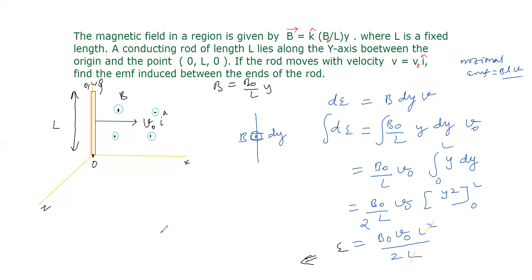This induced EMF across the ends of the rod is EMF = B0V0L/2. This is the answer. So induced EMF in the varying magnetic field is B0V0L/2.